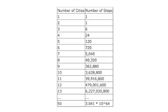Here you see the number of steps that the program would have to go through to calculate the optimal path between various numbers of cities. For three cities it's only six steps — not terribly difficult. But notice how quickly it goes up: four cities is 24 steps, five is 120, six is 720 steps. By the time we get to 50 cities, the number is 3 times 10 to the 64th. This is a very large number and the program could never complete such an operation, even with a very fast computer.